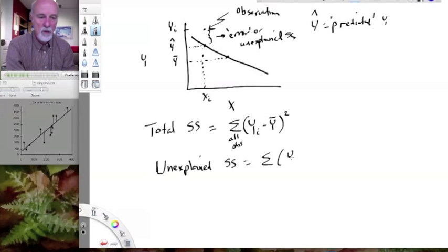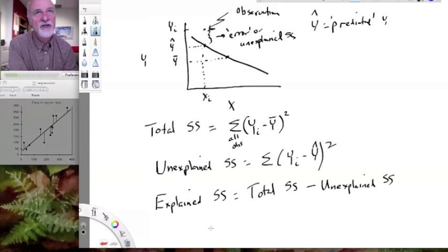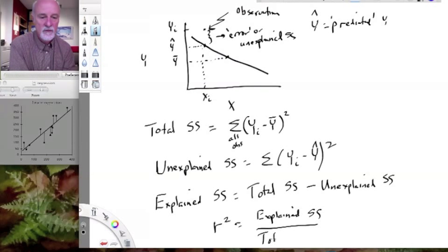So that's Y sub I minus Y predicted. Now you notice that that's going to be a smaller value than the deviation from the mean. So that means there's another component, the explained sum of squares, which is going to be the difference between those two, the total sums of squares minus the unexplained sums of squares. It's going to be the explained sums of squares. So what am I all leading up to? So we want R squared to encapsulate what proportion of the variation in Y is explained by X.